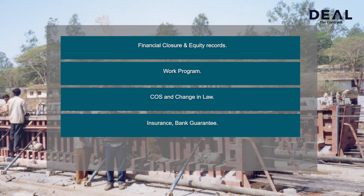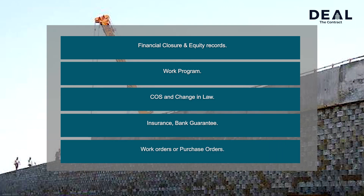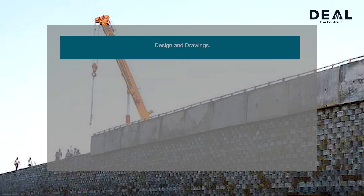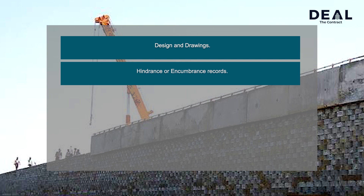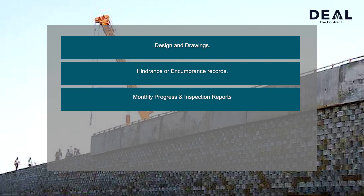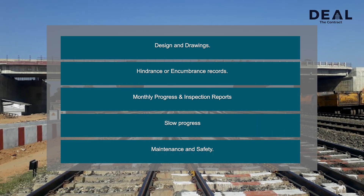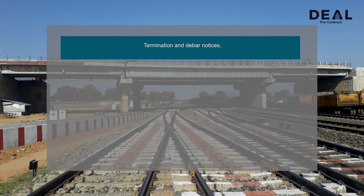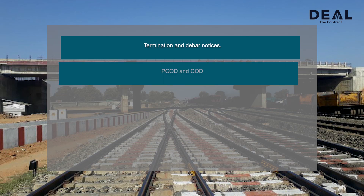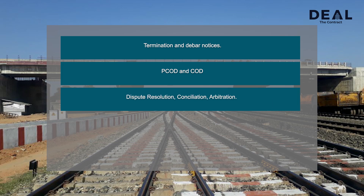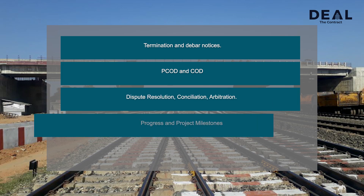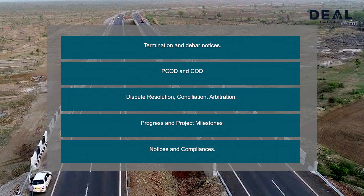Additional search keywords include: insurance, bank guarantees, work orders or purchase orders, design and drawings, encumbrances records, monthly progress and inspection reports, slow progresses, maintenance and safety, termination and debar notices, PCOD and COD, dispute resolution, conciliation, arbitration, progress and project milestones, and notices and compliances.